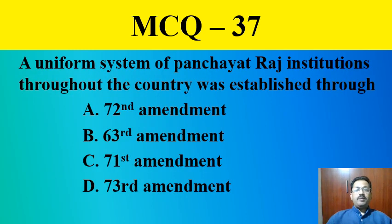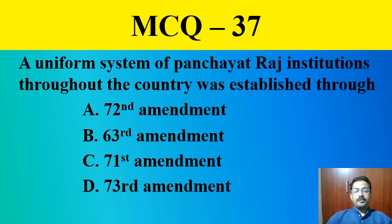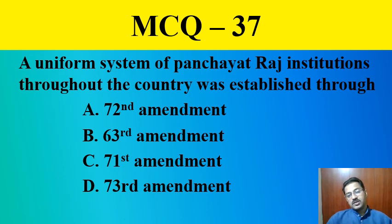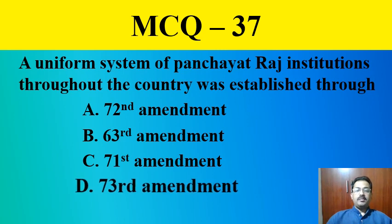MCQ question thirty-seven: A uniform system of Panchayat Raj institutions throughout the country was established through — A. 72nd Amendment, B. 63rd Amendment, C. 71st Amendment, D. 73rd Amendment. The correct answer is option D: the 73rd Amendment.